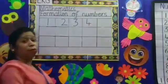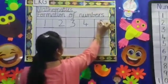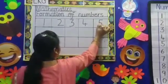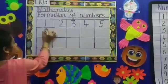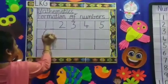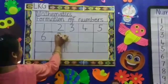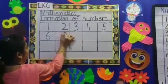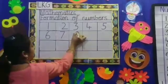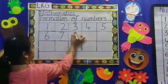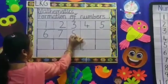Number 4: you make a standing line, a sleeping line, and then from the center you pull a line down — that's your 4. Number 5: you make a sleeping line, a standing line, and half around — number 5. Number 6: you start from the top, come right down, and round again — number 6. Number 7: you make a sleeping line and a slanting line — number 7.